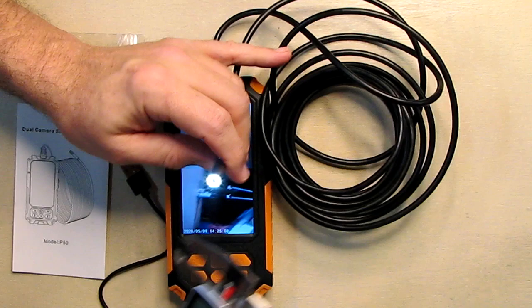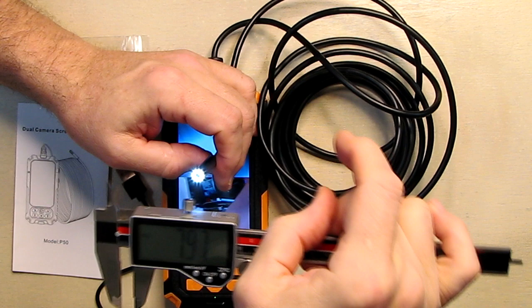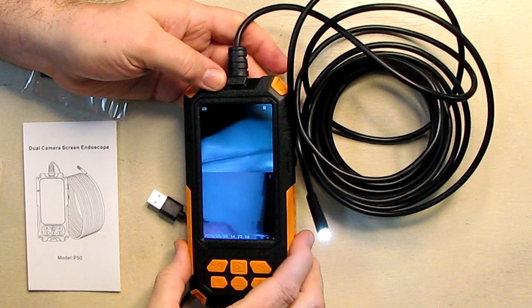So I wanted to take a look at the probe diameter. I'm going to take a micrometer right here to show you how small it is. So it's coming up at about eight millimeters, 7.97 millimeters. So that's nice and small. It's going to allow you to get into a lot of tight spots with this camera.